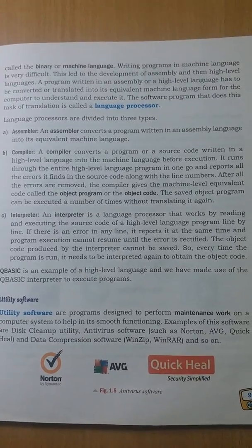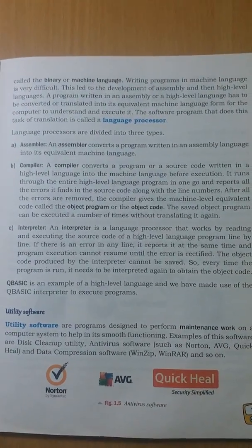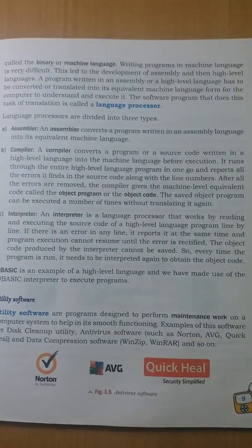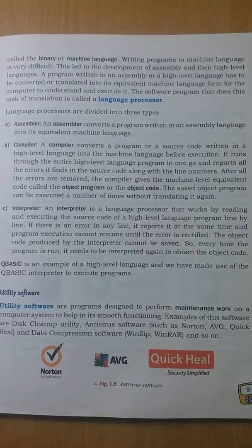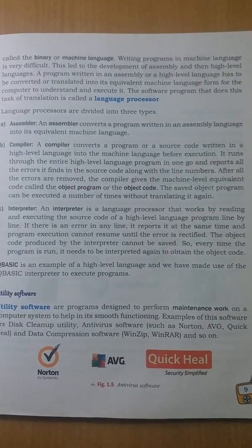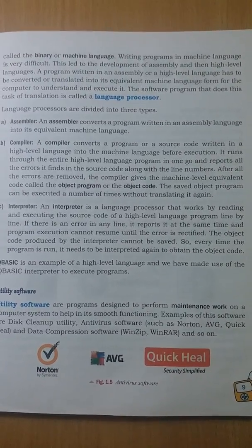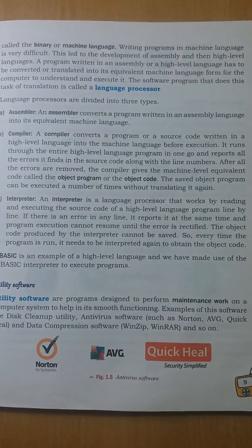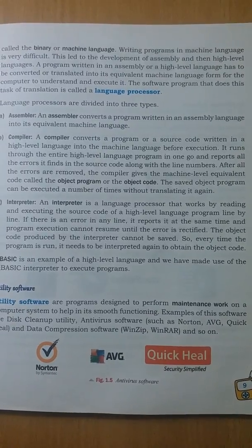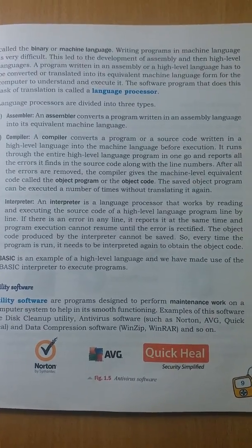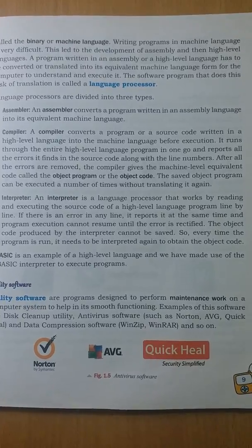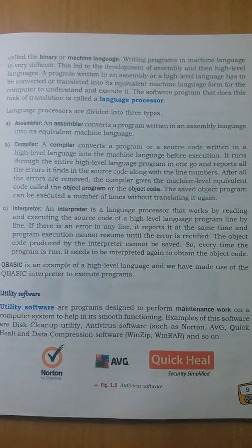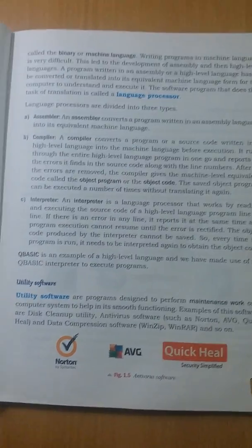Consider this example: your English teacher gave you a story and asked you to translate it into Hindi. One student wrote out the complete story at once and then started speaking it all in Hindi. Another student read one sentence, translated it into Hindi and told it to you, then moved to the next sentence. The second method is a little bit slower — that illustrates the difference between a compiler and an interpreter.